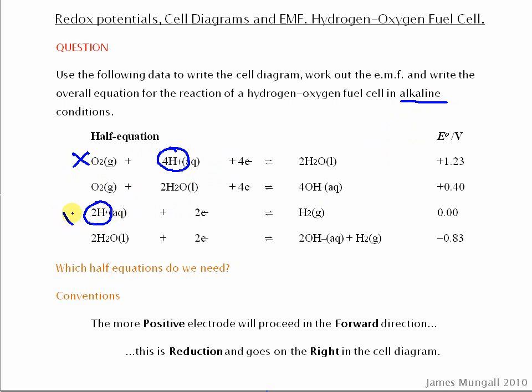So we'll be using those two half equations and the convention which you need to know, or you know this in several ways, but it's kind of taken as red, the more positive electrode that's positive in terms of the voltage there. So will proceed in the forward direction and this is reduction, we know reduction is gain of electrons, and it goes on the right in the cell diagram.